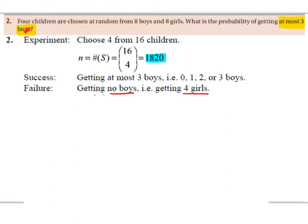You're choosing four children out of eight boys and eight girls, so you're choosing four children out of 16 children. If you want to work out the probability of getting no boys, then that must mean you get all girls. And if you're choosing four, that means you're getting four girls. We're going to work out the probability of choosing four girls and then take that away from one, because we're working out the opposite of the question.